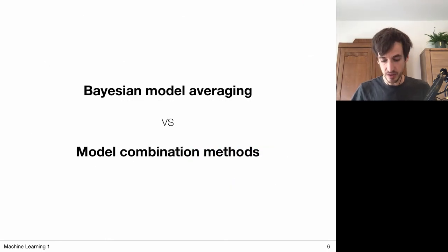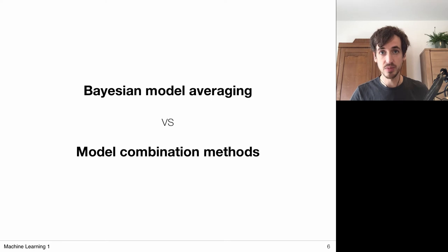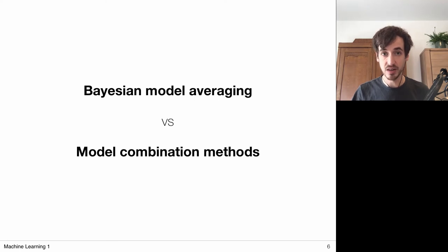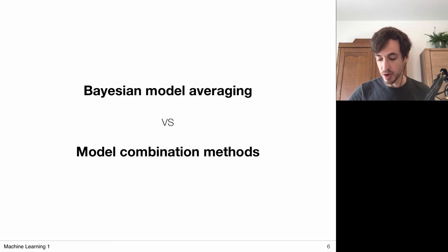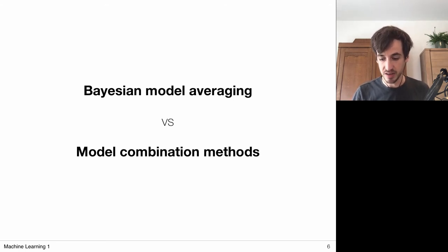Next I want to focus on the difference between Bayesian model averaging and model combination methods in general. I started this video by saying Bayesian model averaging is a form of model combination, but this is not entirely true. The main difference is that with Bayesian model averaging we essentially set out to recover the single model responsible for generating our data, whereas in model combination methods we think of data as possibly generated by several processes and predictions made by several predictive systems.